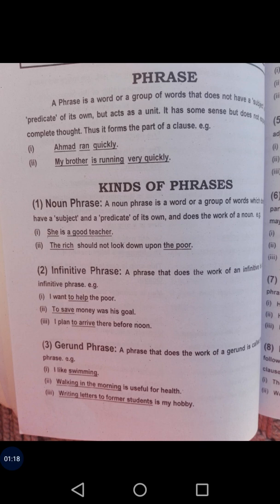For example: 'Ahmad ran quickly' and 'My brother is running very quickly.' These are all phrases. 'My brother' is a phrase that acts as a noun phrase. 'Running' is a verb phrase. 'Very quickly' is an adjective phrase.